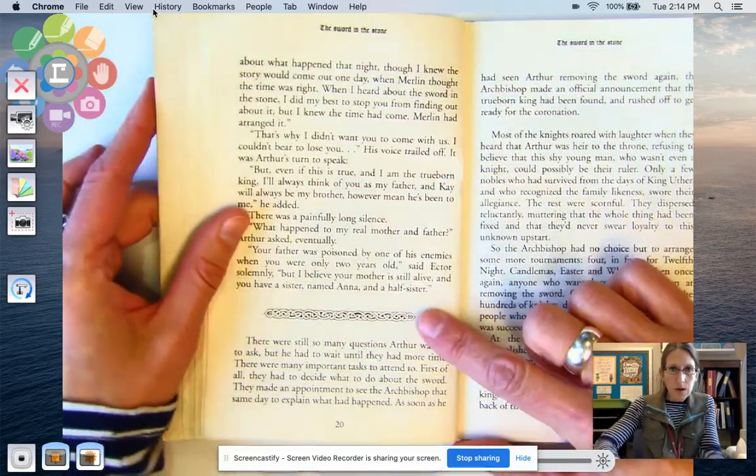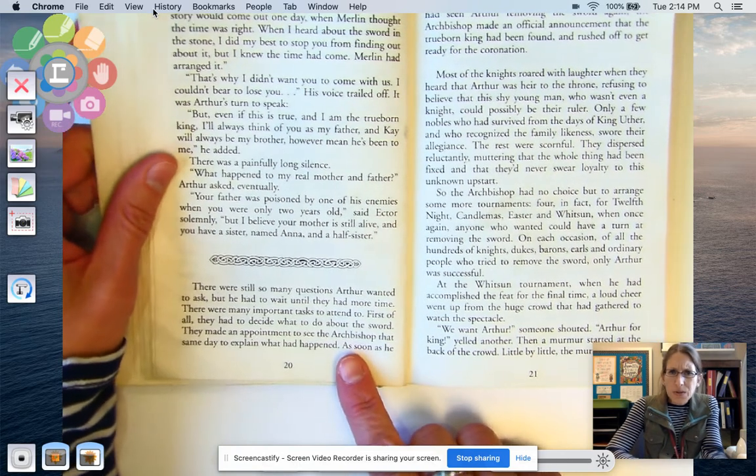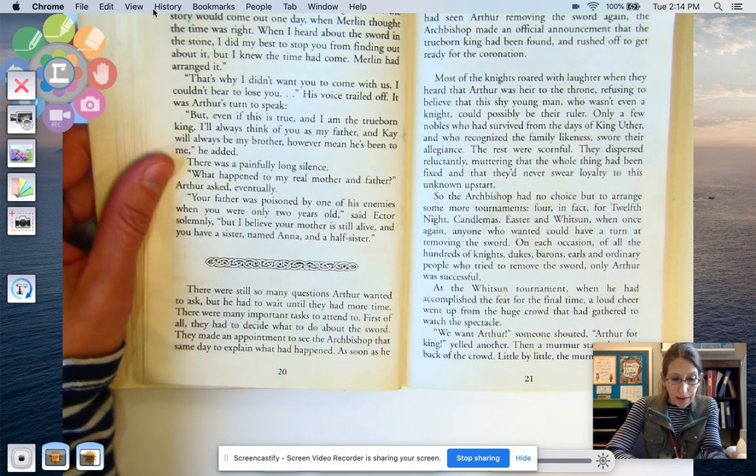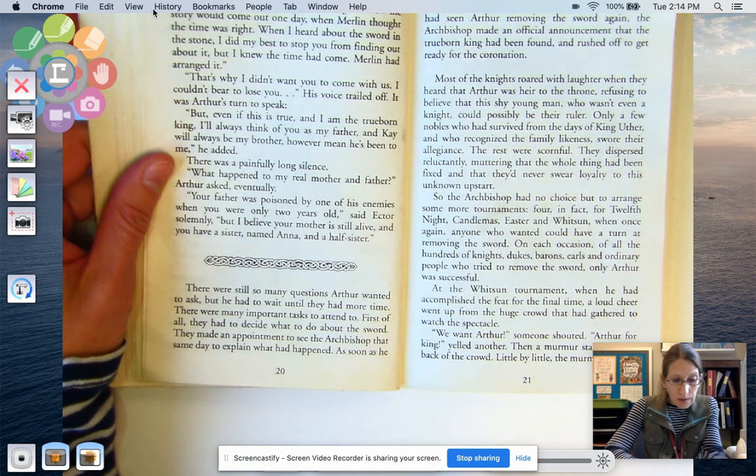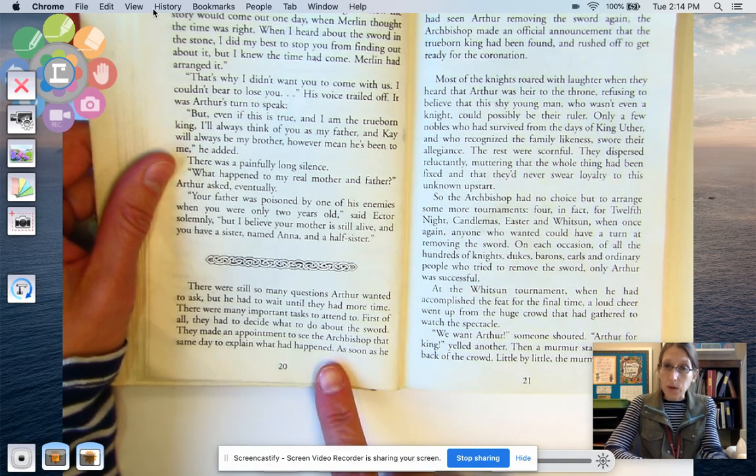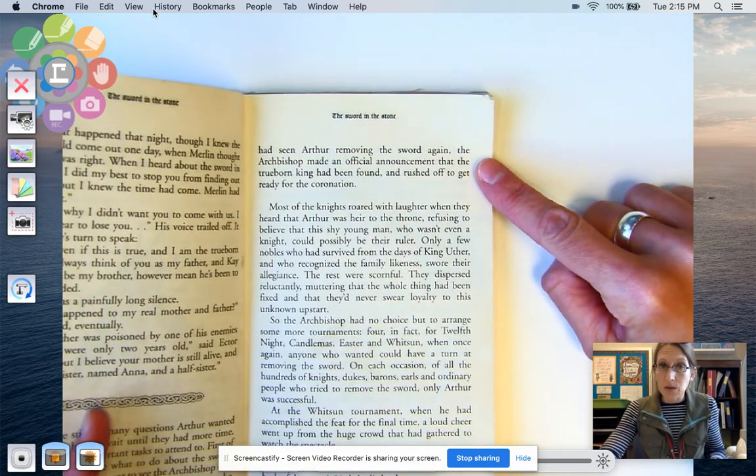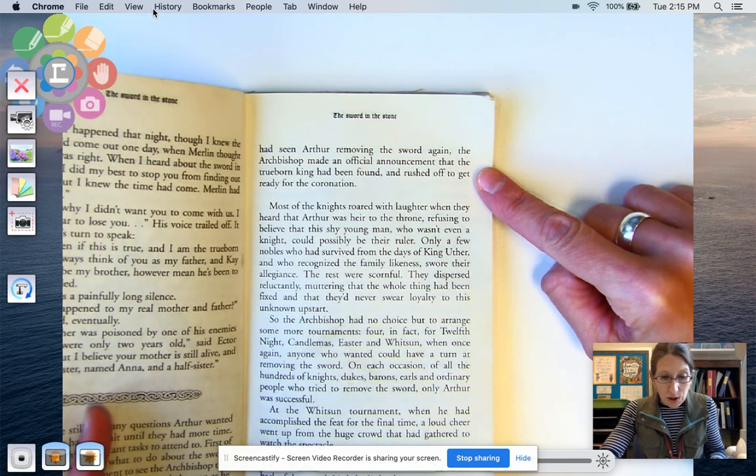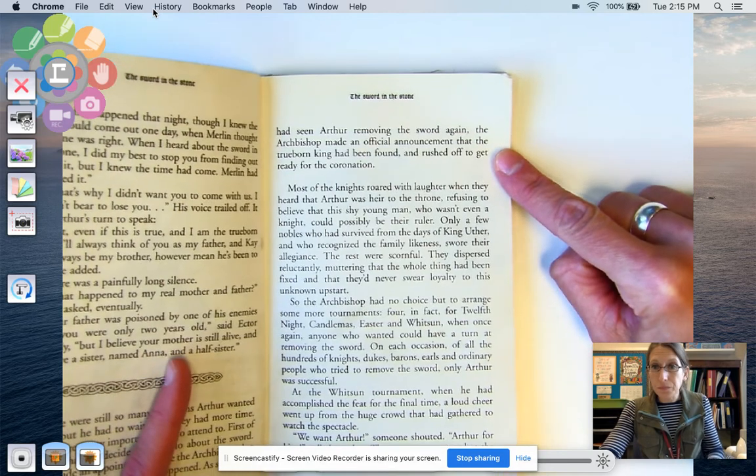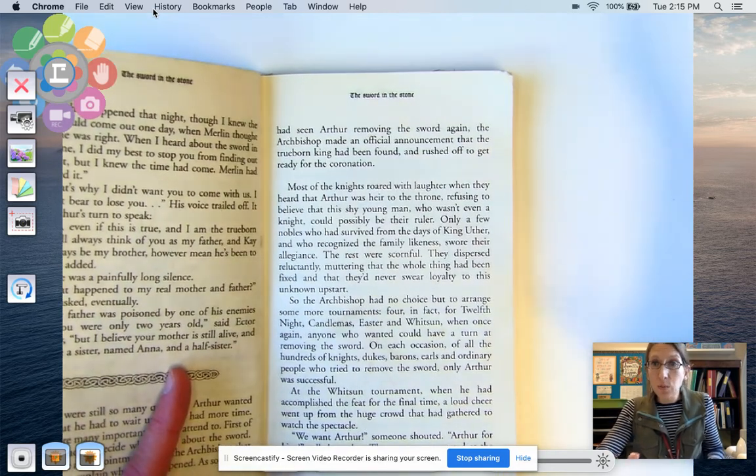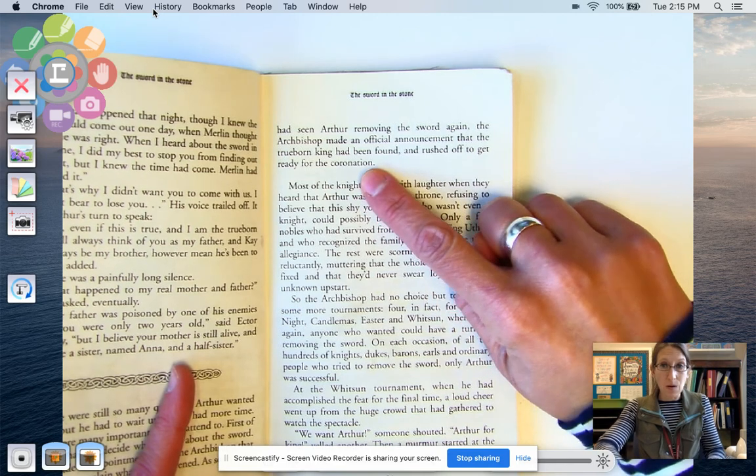And this is right after Arthur learns about his family. So Sir Ector's told him about his family. There were still so many questions Arthur wanted to ask, but he had to wait until they had more time. There were many important tasks to attend to. First of all, they had to decide what to do about the sword. They made an appointment to see the archbishop that same day to explain what had happened. As soon as he had seen Arthur removing the sword again, the archbishop made an official announcement that the true born king had been found and rushed off to get ready for the coronation. Wow. What an exciting time. So the archbishop, it's kind of the person in charge of the church. He announced that Arthur, that they had found the true born king and that he's getting ready to crown him king. That's what a coronation is. It's like a ceremony where someone becomes king or queen.